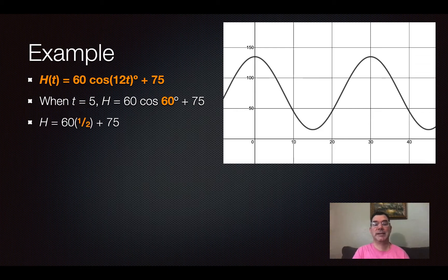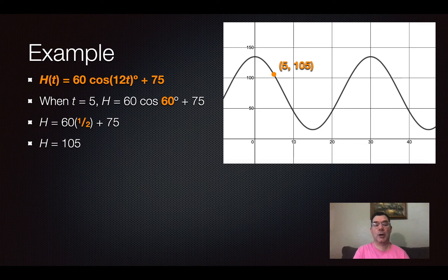The cosine of 60 degrees is 1 half, so I'm going to make that replacement. And so now I know that my height is going to be 60 times 1 half plus 75 and that is 105. So, I know that the point 5, 105 is on my graph.